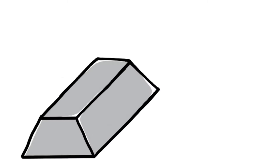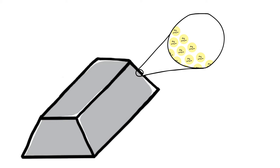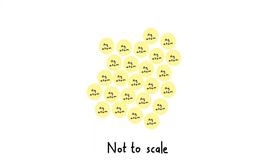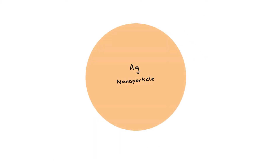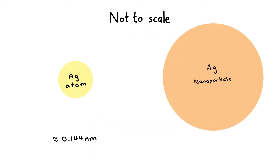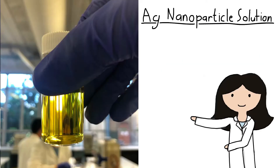When talking about silver, you probably imagine a shiny grey ingot. That is the usual appearance of polished bulk silver. However, silver can also exist in tiny clumps of atoms known as nanoparticles. Nanoparticles are defined to have at least one dimension that is between 1 and 100 nanometres, which is why you can't see any individual silver nanoparticles with the naked eye.